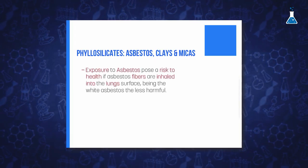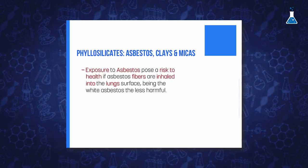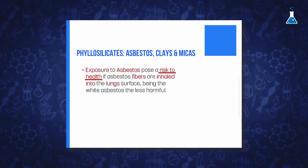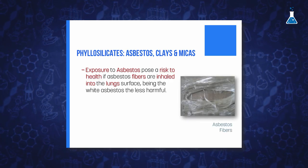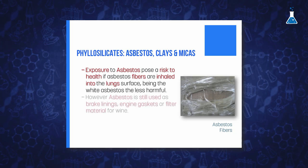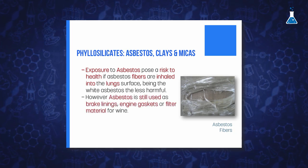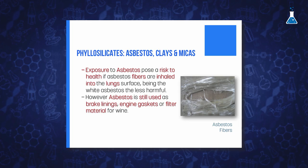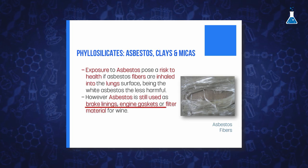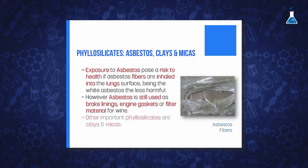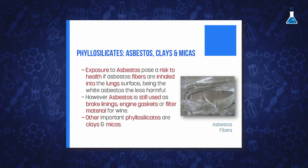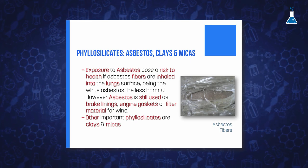Asbestos has been used for thousands of years. For example, ancient Greeks used it as wicks for oil lamps. However, its use declined rapidly as a result of awareness of the health risks from inhaling asbestos fibers into the lung surface, with white asbestos being the less harmful. Considering that asbestos is a very convenient and inexpensive fireproof material, it is still used as brake linings, engine gaskets, and even as a filter material for wine. Other important groups belonging to the family of phyllosilicates are clays and micas.